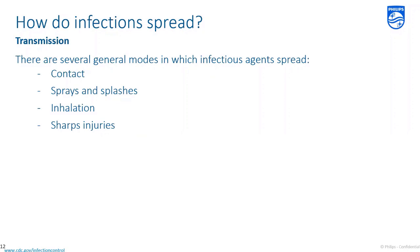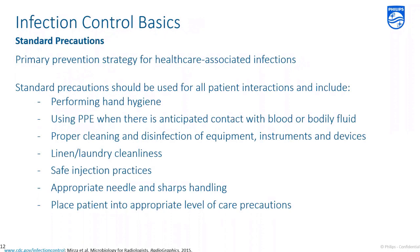Standard precautions were developed in 2007 by the Centers for Disease Control and Prevention and include what you may be familiar with as universal precautions. These simple mitigation efforts serve as the primary way to prevent healthcare-associated infections. Standard precautions apply to all patient interactions and include performing proper hand hygiene, using PPE when there is anticipated contact with blood or bodily fluids, proper cleaning and disinfection of medical equipment, linen and laundry cleanliness, safe injection practices and appropriate sharps handling, and placing patients into appropriate levels of advanced precautions if warranted.